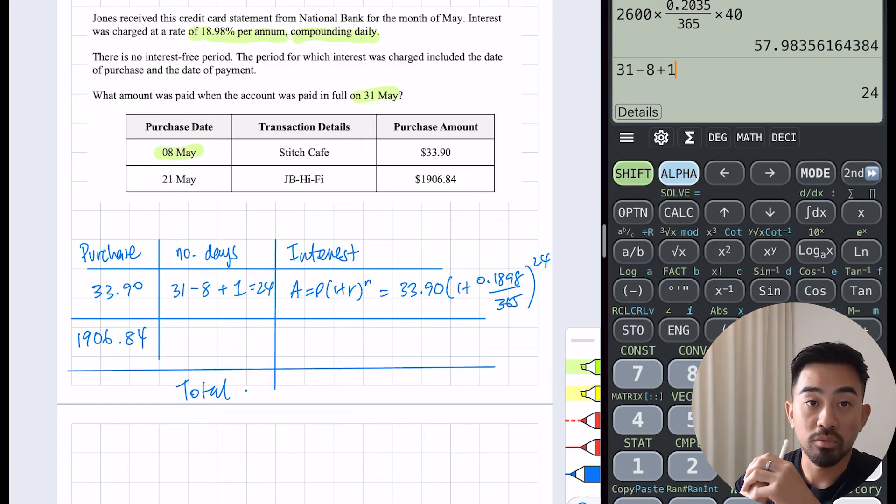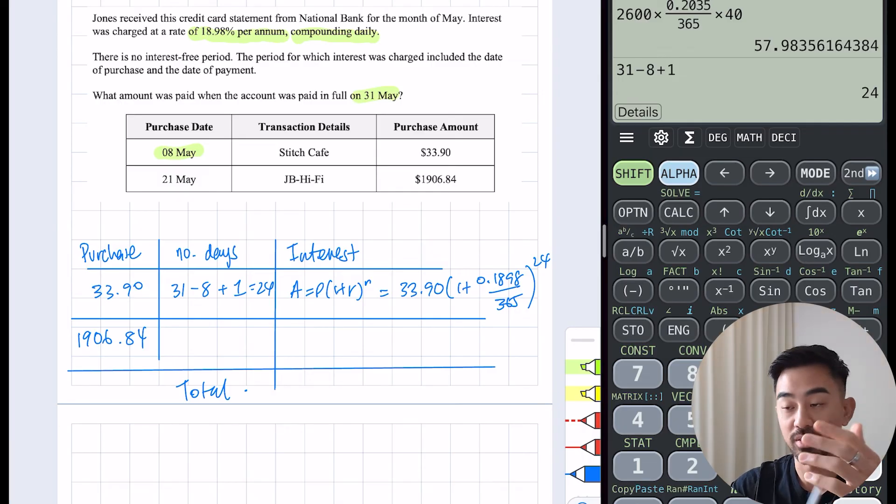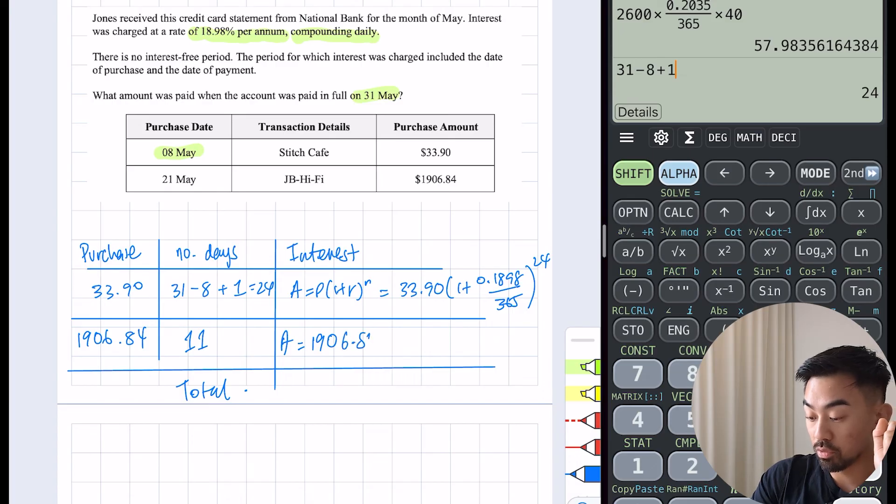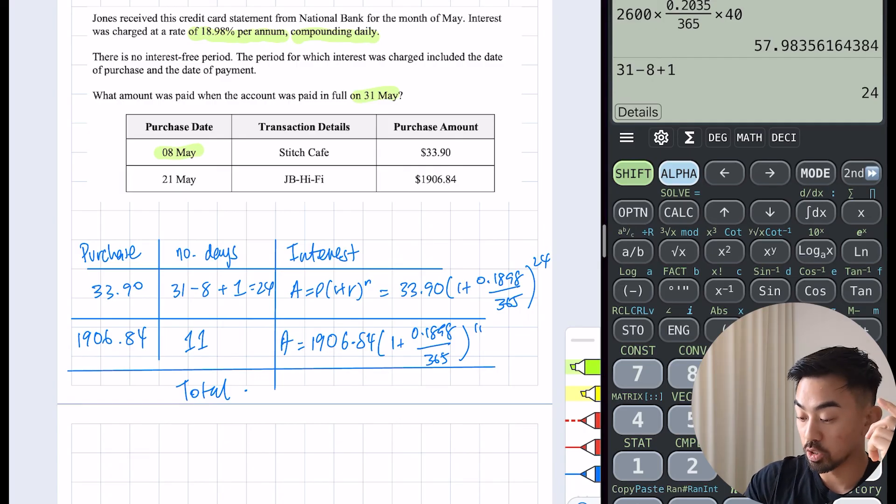The 21st of May till the 31st of May. Don't forget you also have the option of just counting on your fingers: 21, 22, 23, 24, 25, 26, 27, 28, 29, 30, 31. So 11 days. If you're really not sure, just use your fingers.